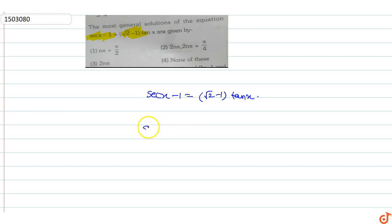We know that sec square x minus 1 is equal to tan square x. This can be written as sec x minus 1 into sec x plus 1, which is equal to tan square x.